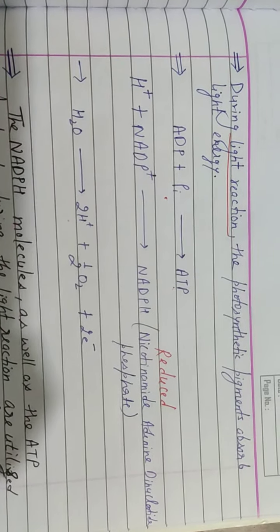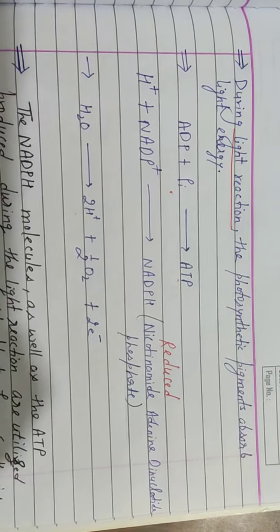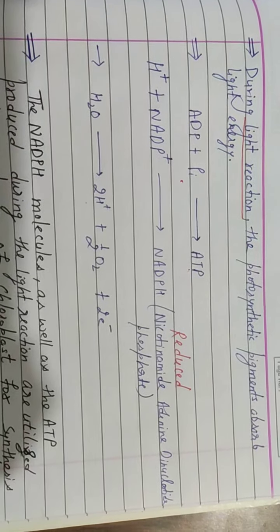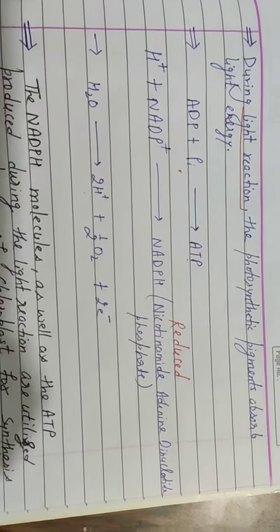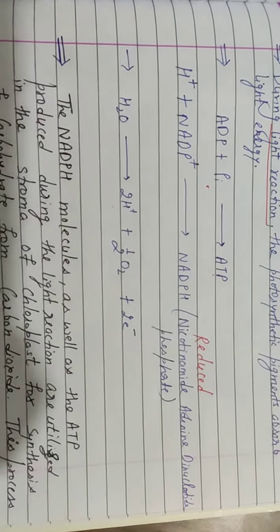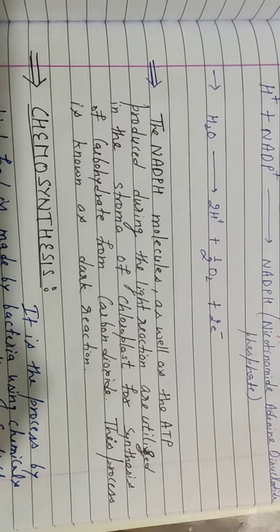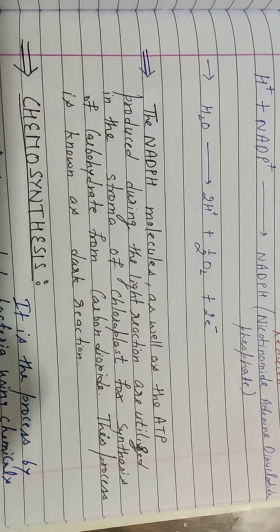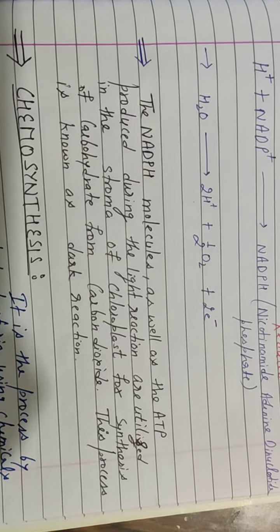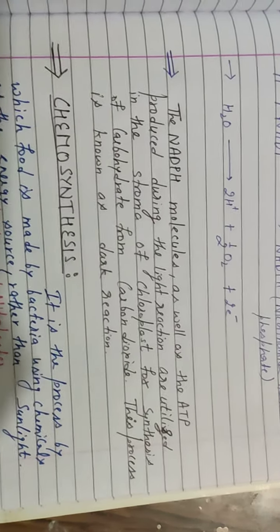These hydrogen ions plus NADP+, that is nicotinamide adenine dinucleotide phosphate, convert into NADPH, reduced form. Light reaction end products are NADPH plus ATP, which are produced in light reaction. Now they are utilized in stroma to form carbohydrate from carbon dioxide and that process is known as dark reaction.